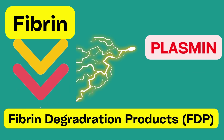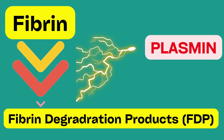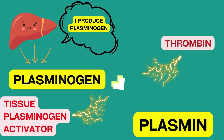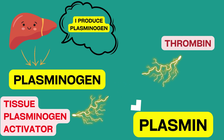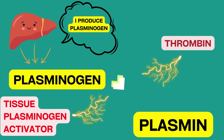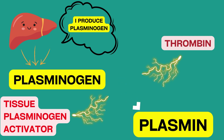The dissolution of fibrin occurs by the action of a proteolytic enzyme known as plasmin. Plasmin is the activated form of plasminogen. Plasminogen is a plasma protein that is synthesized by the liver and is present in the blood plasma.